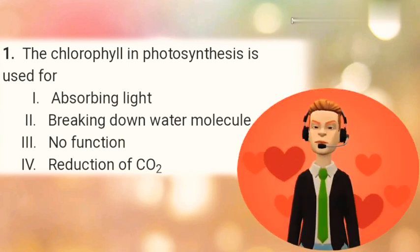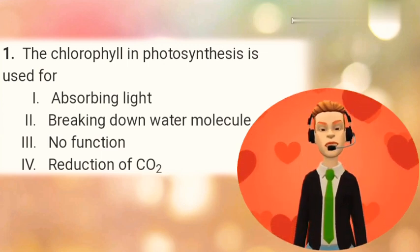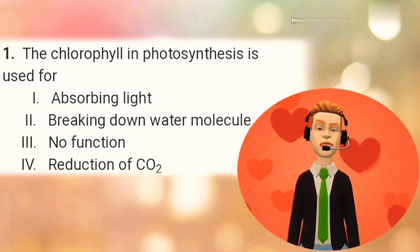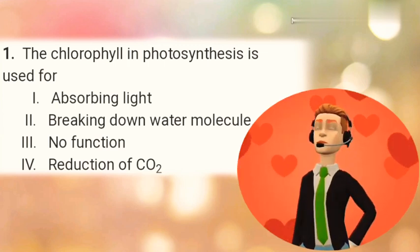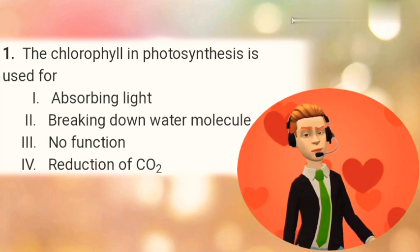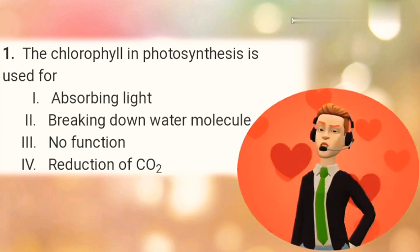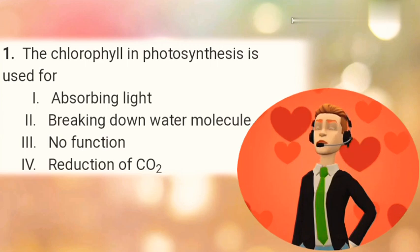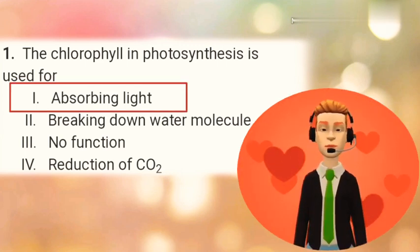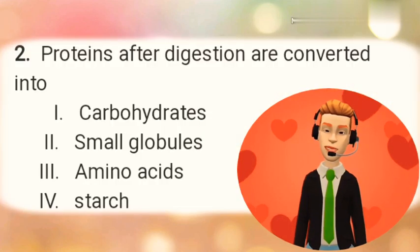Here is our first question. Question number 1: The chlorophyll in photosynthesis is used for? Option 1: Absorbing light. Option 2: Breakdown of water molecule. Option 3: No function. Option 4: Reduction of CO2. The right answer is Option 1 — chlorophyll in photosynthesis is used for absorbing sunlight.